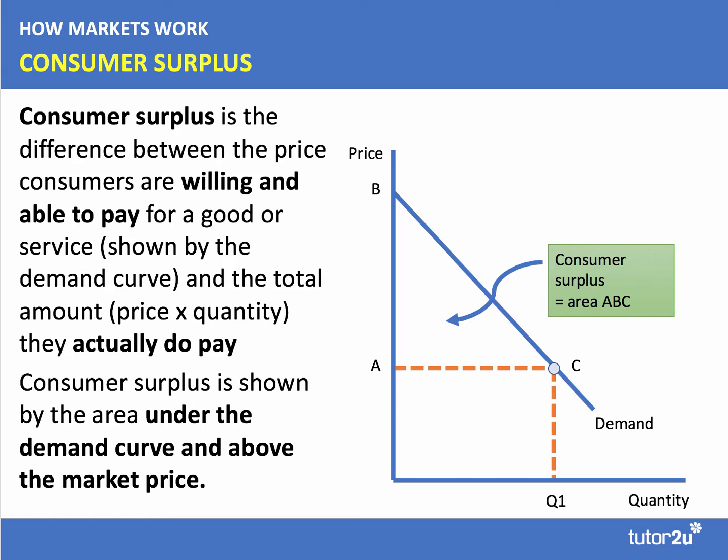A quick bit of revision: consumer surplus is a concept which tells us the difference between what people are willing and able to pay for a particular product — reflected in the demand curve — and the total amount they actually do pay, the price times quantity. Consumer surplus is shown by the area underneath the demand curve and above the market price, shown as triangle ABC on the diagram.